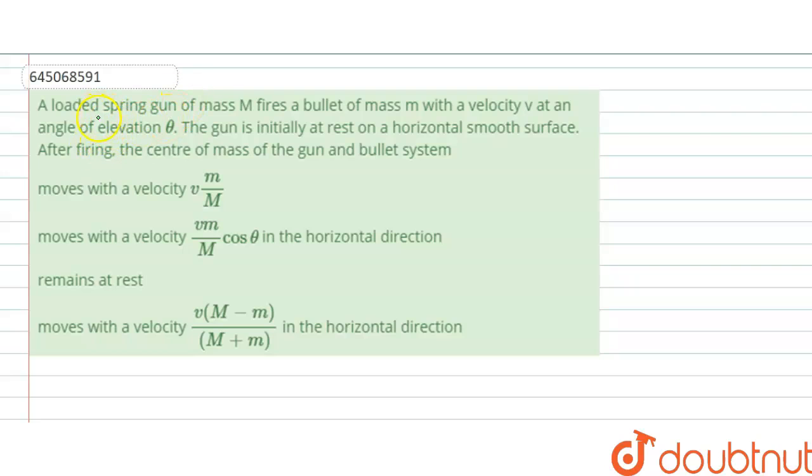We have a question: a loaded spring gun of mass M fires a bullet of mass m with velocity v at an angle of elevation theta. The gun is initially at rest on a horizontal smooth surface. After firing, the center of mass of the gun and bullet system...